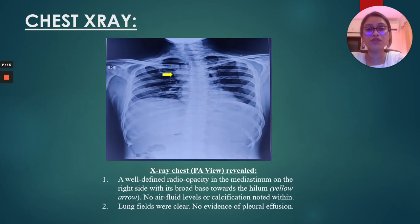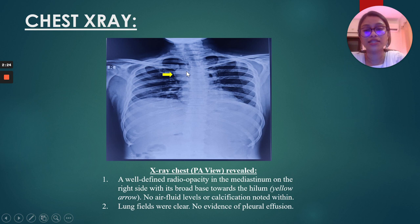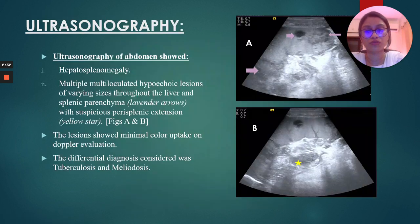This is a frontal radiograph of the chest in PA view, which revealed a well-defined radio-opacity in the mediastinum on the right side, with its broad base towards the hilum. No air-fluid levels or calcification were noted within. Lung fields were clear with no evidence of pleural effusion.